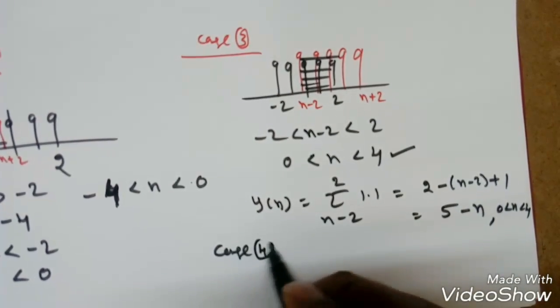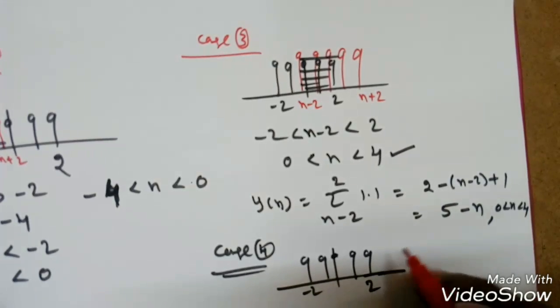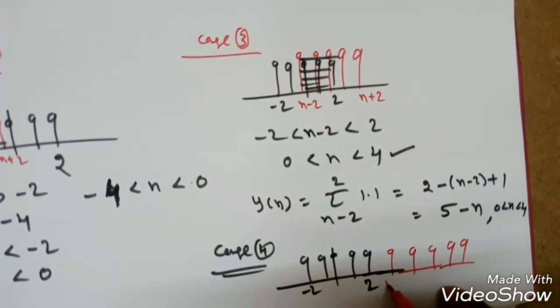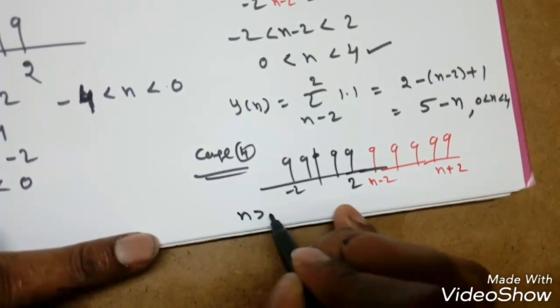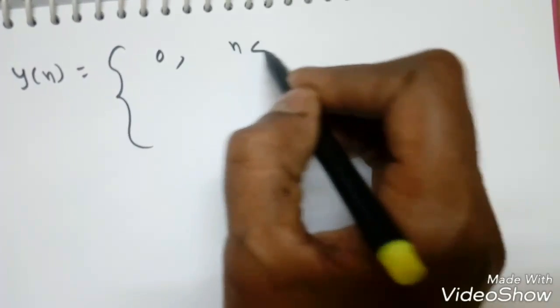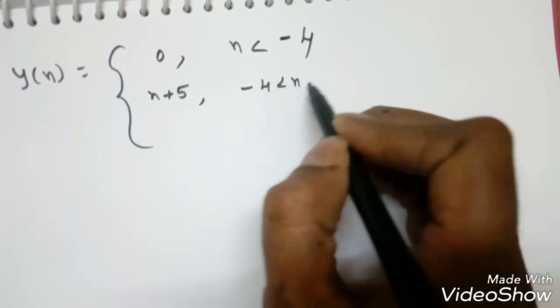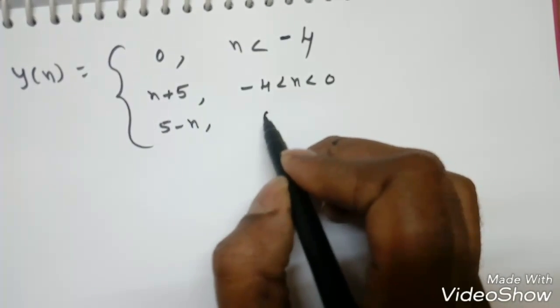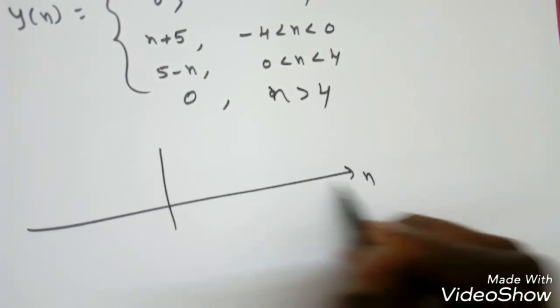Case 4: when n−2 > 2, i.e., n > 4, there is no common region, so y(n) = 0. Summarizing: y(n) = 0 for n < −4; y(n) = n+5 for −4 ≤ n < 0; y(n) = 5−n for 0 ≤ n ≤ 4; y(n) = 0 for n > 4.